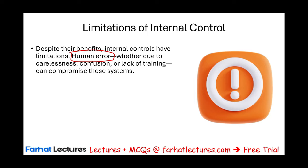If an employee doesn't understand how to handle internal controls, it doesn't matter how advanced or technologically sophisticated that control is. For example, if you tell an employee to always check a customer's credit before making a sale — that's a good control — but if the sales clerk doesn't check their credit, it's not working. You may want to automate this process, but that's the point: human error is a limitation.